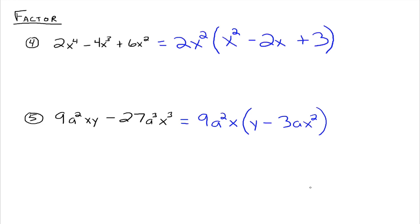If you distribute 9a squared x through, you'd have 9a squared xy as the first term, minus 27a cubed x cubed as the second term. This is the factored form. The greatest common factor is 9a squared x — just like in the previous example the greatest common factor was 2x squared. We're just rewriting our expressions using the reverse of the distributive property — that is the idea of the greatest common factor.